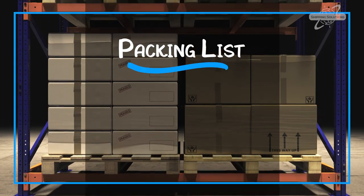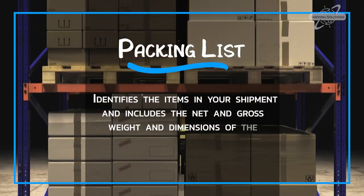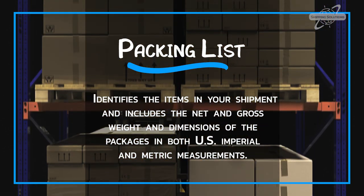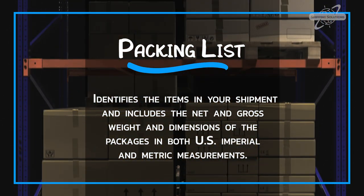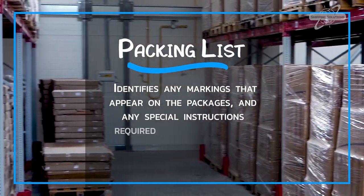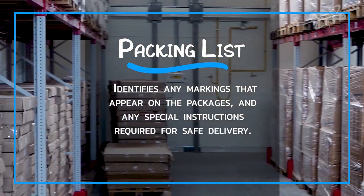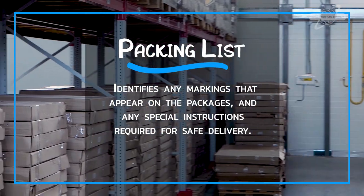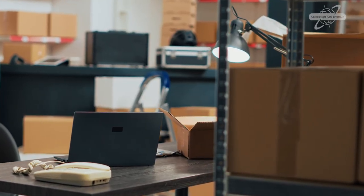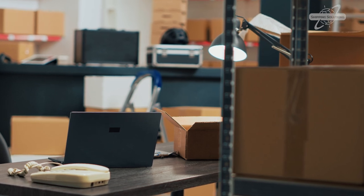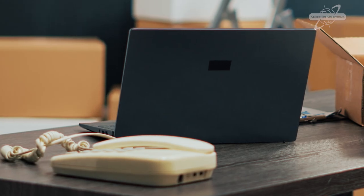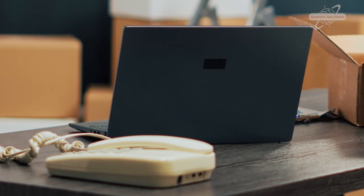The packing list identifies the items in your shipment and includes the net and gross weight and dimensions of the packages in both US imperial and metric measurements. It identifies any markings that appear on the packages and any special instructions required for safe delivery. If cargo is lost or damaged, or there's a disagreement about the weight or measurement of the goods, you'll need the packing list. In fact, it's required to file an insurance claim.